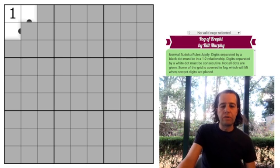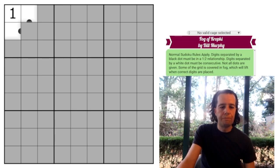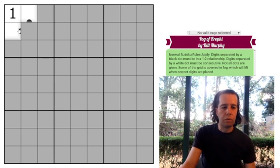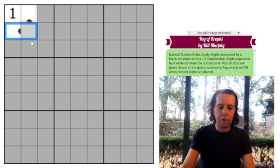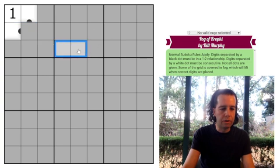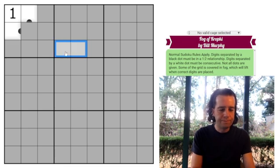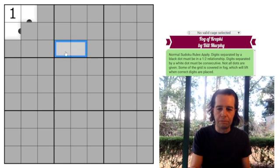The rules are simple, we've got normal Sudoku rules apply. Put the digits 1 to 9 in each row, column, and box. Digits separated by a black dot are in a 1 to 2 relationship, so these can be 2, 4, 3, 6, something like that. Digits separated by a white dot must be consecutive. I don't see any white dots, but they're in here somewhere. So this can be 3 and 4, 7, 8, you know what consecutive means.